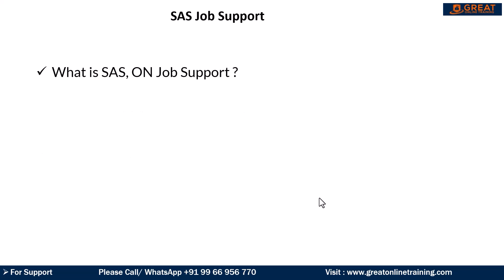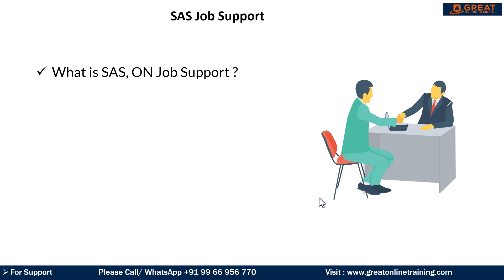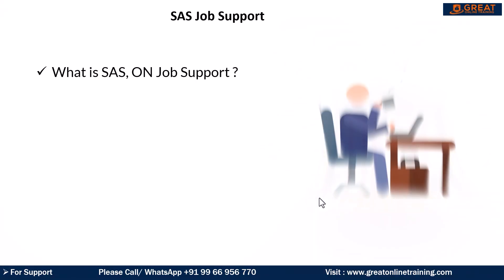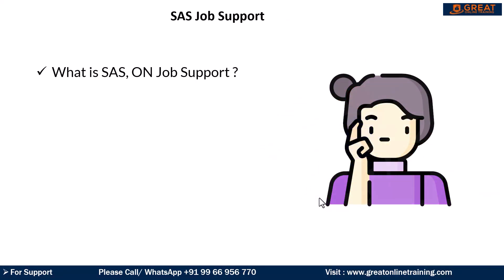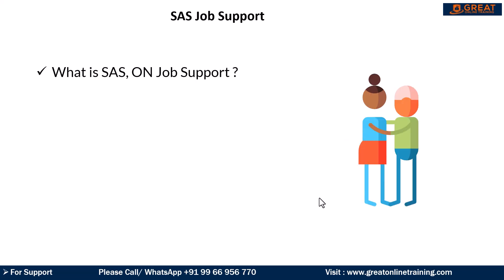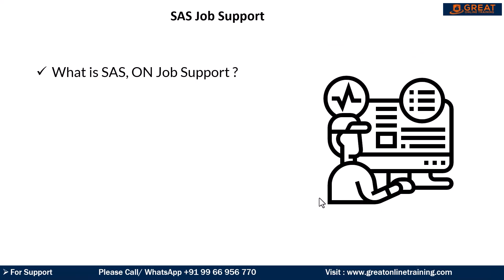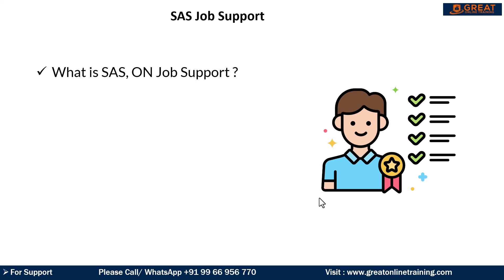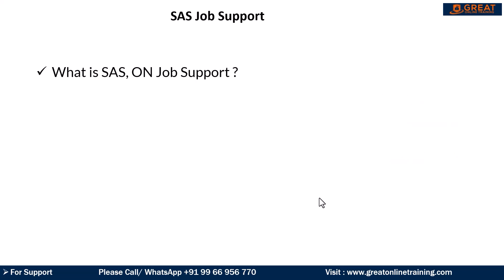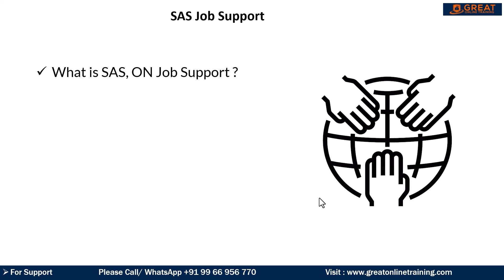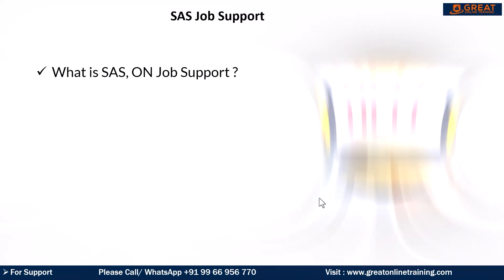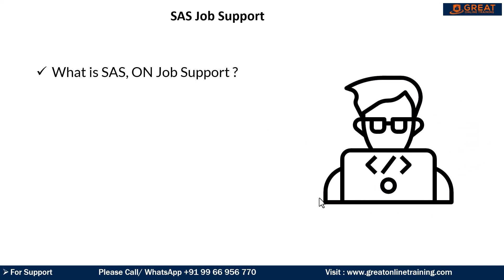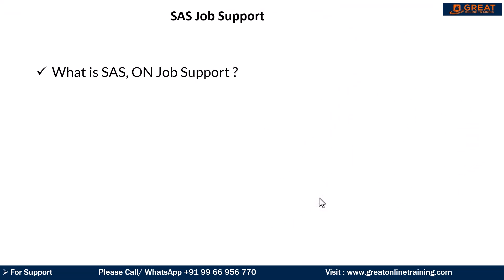What is SaaS on-job support? This is mainly about helping people who already have a SaaS job and are stuck somewhere and need some help. They are mostly programmers who are already working in the real-time industry, but due to some lack of skills, they are depending on us. On-job support means they already have a job and are looking for help within that job. Whenever they get stuck, we try to support them — that is the definition of on-job support.